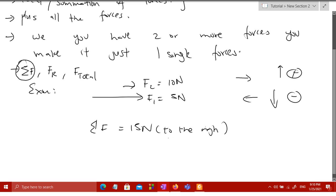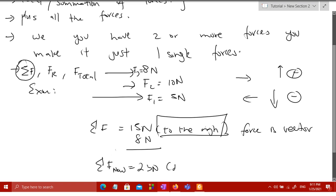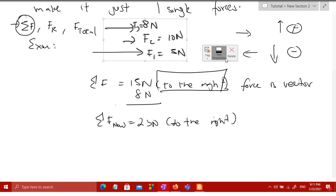What if I add one more vector, which is 8 Newton, F3? Of course, you add 8 to the 15, so the new resultant force is 15 Newton plus 8 Newton, which gives you 23 Newton to the right. Don't forget the direction.